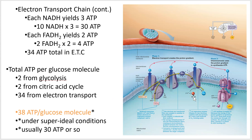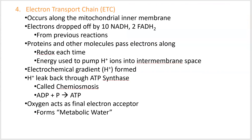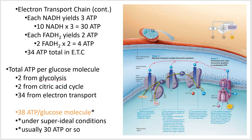The depleted electrons at the bottom of the chain need a final acceptor. That's oxygen — 2H⁺ plus ½O₂ plus electrons makes water. So oxygen is the final electron acceptor, and you produce metabolic water inside your cells. It's not enough to survive on for most animals, but kangaroo rats eat only dry seeds and insects, never drink water, and survive on metabolic water through efficient conservation mechanisms.